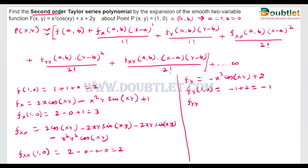Next, we find the second-order partial derivative with respect to y. Differentiating again gives x⁴·sin(xy), and the constant term becomes 0. Putting x = 1, y = 0, the result is 0. So fyy(1, 0) = 0.